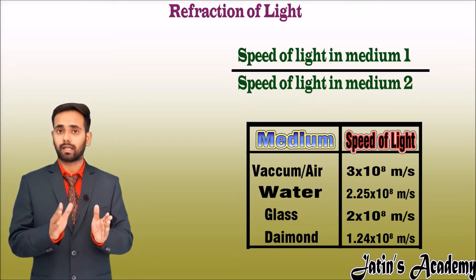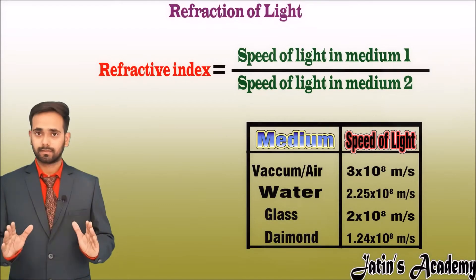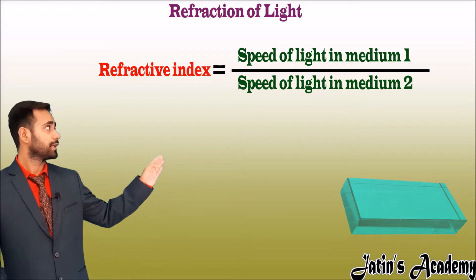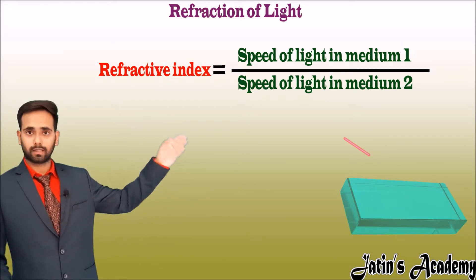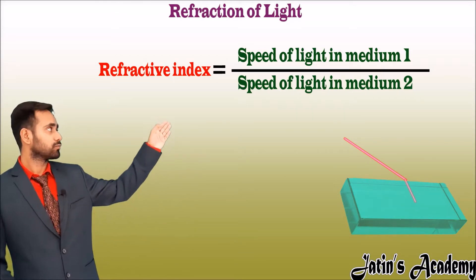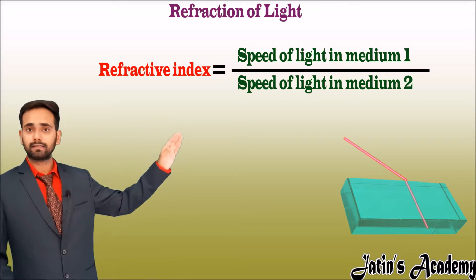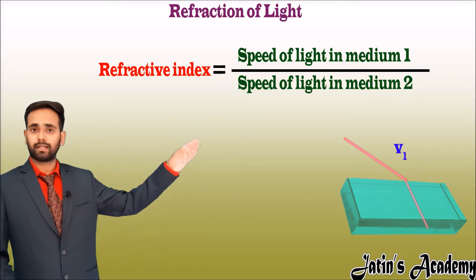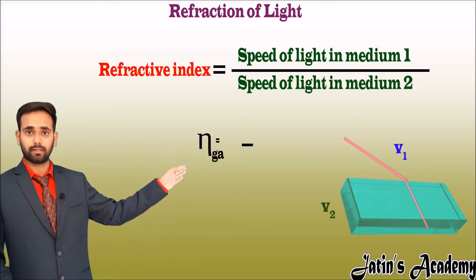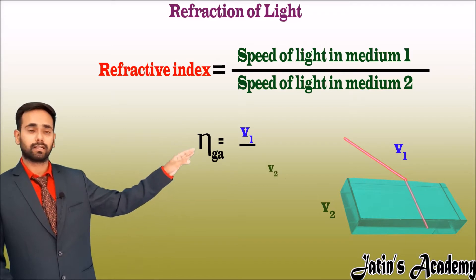This new term is called refractive index. Let us understand the term refractive index with an example. Here I am taking a glass slab in which light is coming from air to the glass slab. Air is an optically rarer medium and glass is an optically denser medium. When light is moving from rarer to denser medium, it bends towards the normal. Let the speed of light in air be v1 and speed of light in glass be v2. The refractive index of glass with respect to air equals the speed of light in air (v1) upon speed of light in glass (v2).